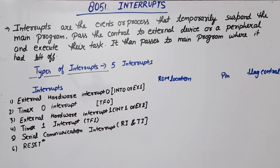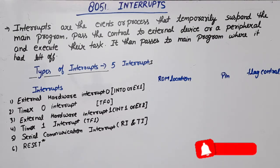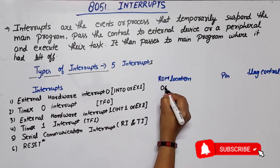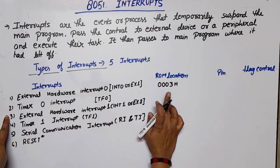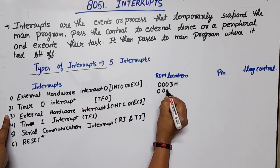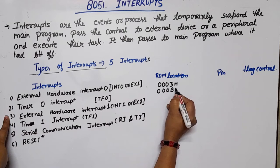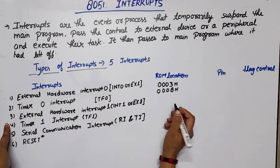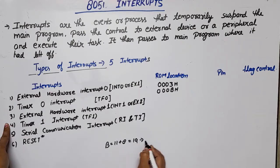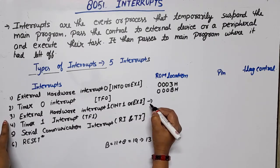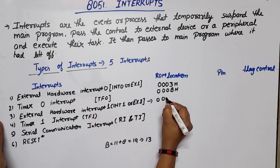When an interrupt occurs, our program jumps to the starting address of the ISR. That ISR address is a ROM location. Let's see what the ROM location is for each interrupt. For External Hardware Interrupt 0 (INT0), the address is 0003H. For Timer 0 (TF0), the address is 000BH.